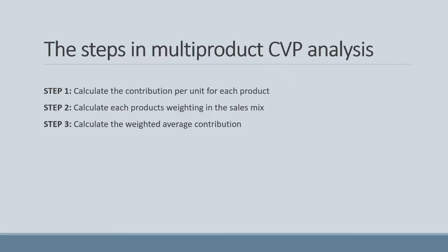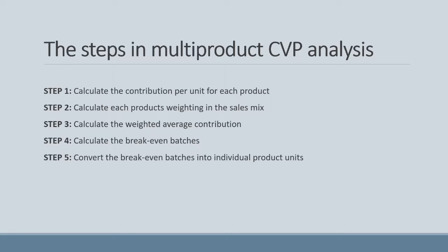Step 3 is to calculate the weighted average contribution. The value may differ based on how you performed step 2. In step 4, we apply our standard breakeven formula to calculate the breakeven batches. Finally, in step 5, we take the breakeven batches and, using the sales mix calculated in step 2, convert the batches back into individual product units.